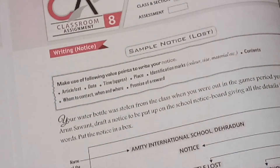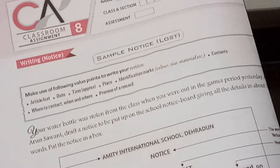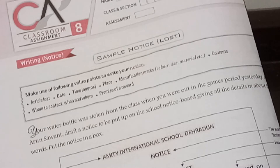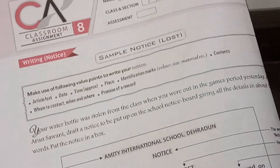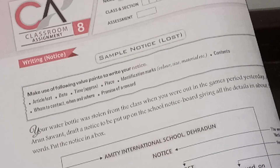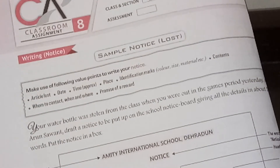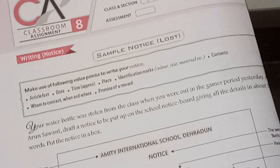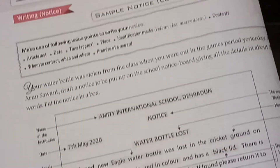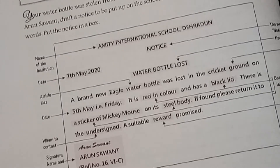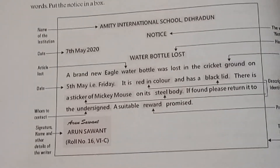Your water bottle was stolen from the class when you were out in the games period yesterday. Arun Savant — draft a notice to be put up on the school notice board, giving all the details in 50 words. Put the notice in a box. Now, first of all, what you have to do is you have to make the three boundaries of your notice.